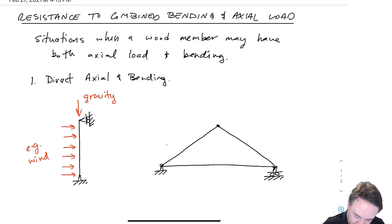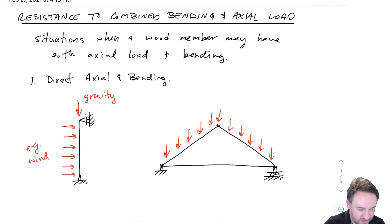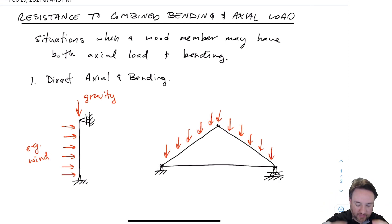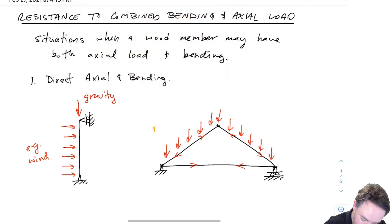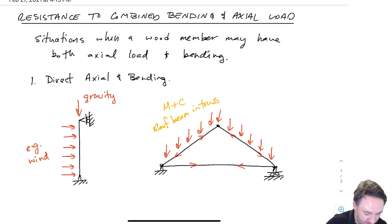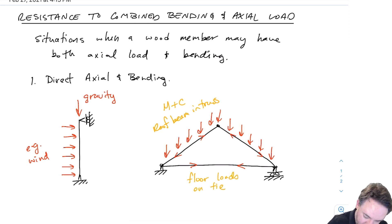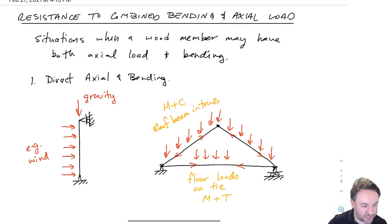Another example is a roof frame where loads come directly from the roofing. For a roof truss with direct bending loads, those loads also cause tension and compression in the truss members. The top members will be in compression and the bottom member in tension. So for the top roof beams we have moment plus compression, and if there's also a floor — say an attic space with loads — then for that bottom member we have moment plus tension simultaneously.